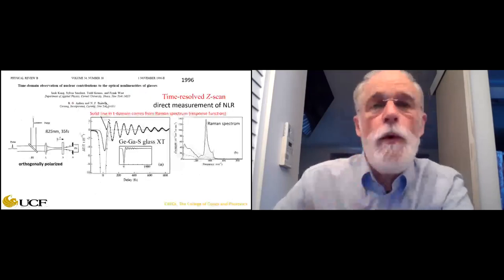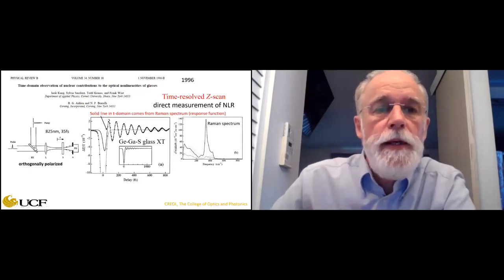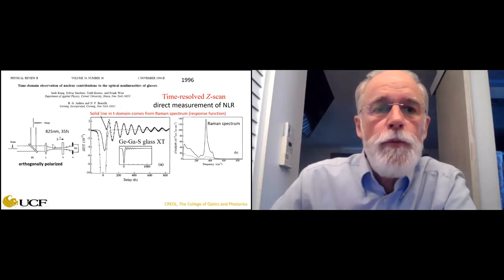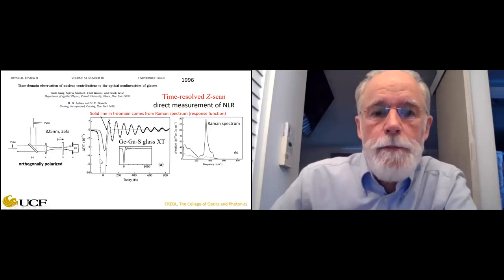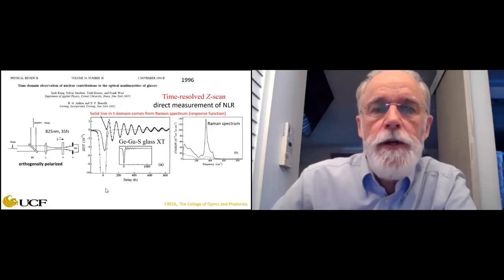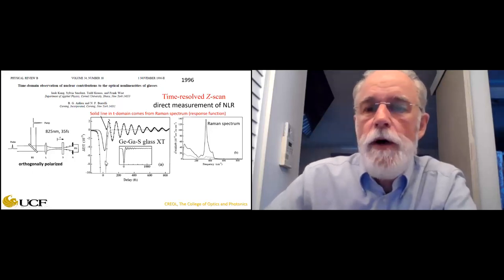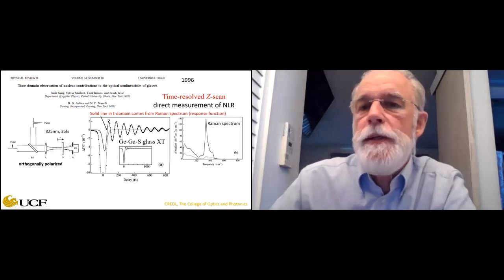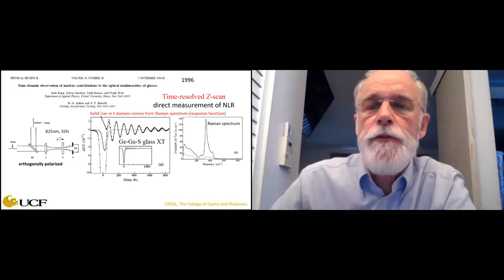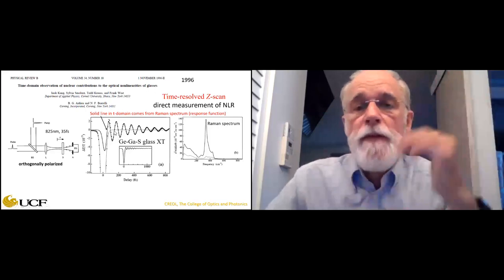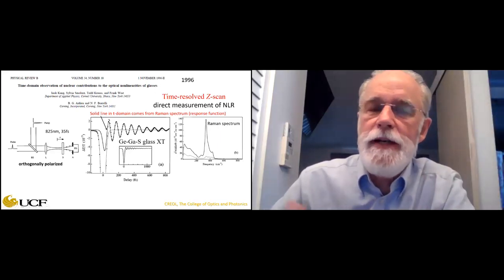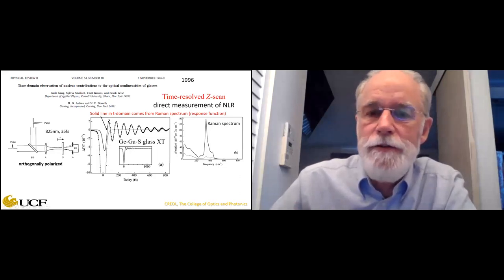I want to mention a nice experiment Frank Wise did using this time-resolved z-scan, separating the beams not by color but by polarization — done on a germanium gallium sulfide glass with the Corning group using 35 femtosecond pulses. The bound electronic response just follows the cross-correlation. But glasses also have a nuclear contribution to the nonlinear refractive index — a Raman contribution. You actually see a very nice peak in the Raman spectrum for this glass, manifesting as oscillatory behavior after you hit it with a delta-function pulse: the sample starts ringing with coherent phonons.